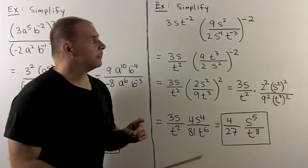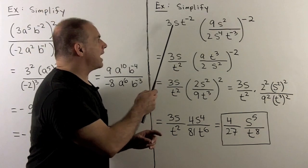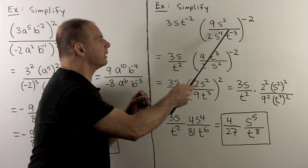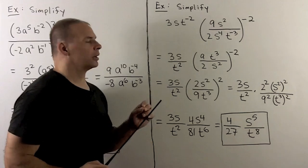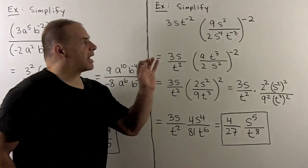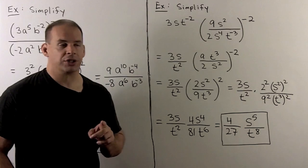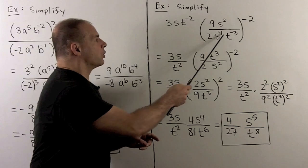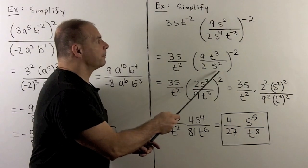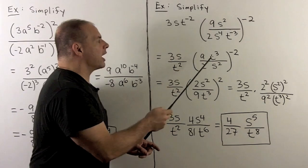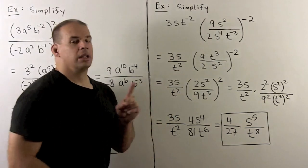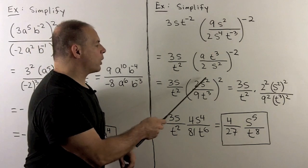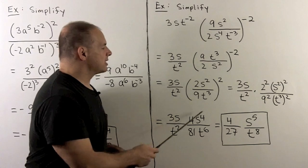For another, slightly more complicated example, let's simplify: three s, t to the minus two, times the quantity nine s squared over two s to the fourth, t to the minus three, raised to the minus two power. Using PEMDAS, I simplify what's in the parentheses first. I have s squared over s to the fourth, which reduces to s squared in the denominator. The t to the minus three can pass to the numerator as t cubed. To get rid of the negative exponent, I flip the fraction: two s squared over nine t cubed, raised to the second power.